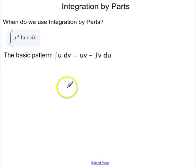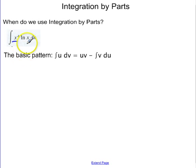This screencast is an explanation of integration by parts. Integration by parts is a technique of integration we use when we have two different kinds of functions being multiplied by each other. In this example, I have a power function, x to the fourth, times a natural log function.